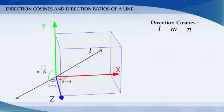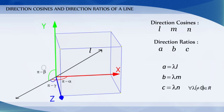If L, M, N are direction cosines and A, B, C are direction ratios of a line, then A equals lambda L, B equals lambda M, and C equals lambda N, for any non-zero lambda belonging to R.